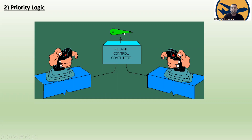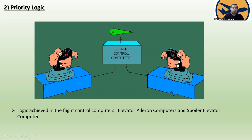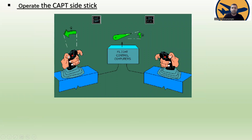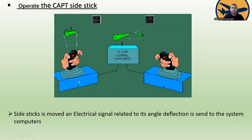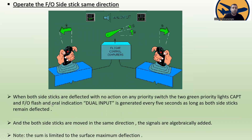Now let's look at the priority logic. You can see the side sticks, the flight control computers, and the flight control surface. The logic is achieved in the flight control computers — the Elevator Aileron Computers and the Spoiler Elevator Computers. When the side stick is moved, an electrical signal related to its angle of deflection is sent to the flight control computers, and then the flight control surface deflects by that same angle.